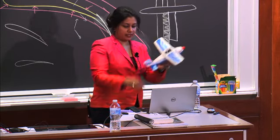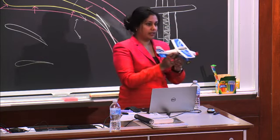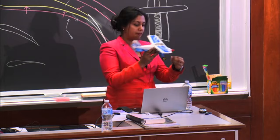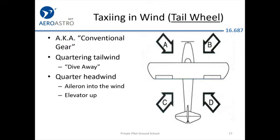A tail wheel airplane has two wheels up front and a wheel at the tail, while a tricycle gear airplane has one wheel up front and two in the back. For a tricycle gear aircraft with a quartering tailwind — wind coming from behind — you want to dive away, turning the ailerons away and pushing forward. If the wind is coming from the front as a headwind, turn the aileron into the wind and keep the elevator neutral. This matters more for little airplanes, which can get bounced around.